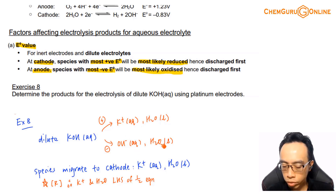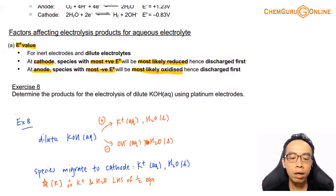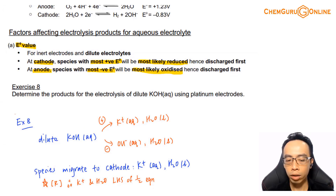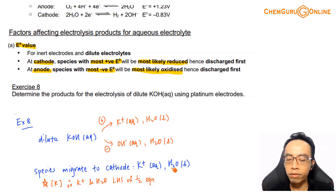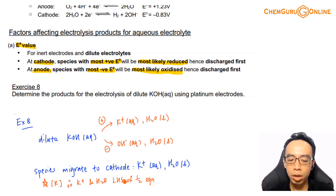For OH⁻, we also have to consider water, because water can also be discharged. So let's consider each one part by part. For the cation, which migrates to the cathode — K+ and water — since water is everywhere, we must consider both species.